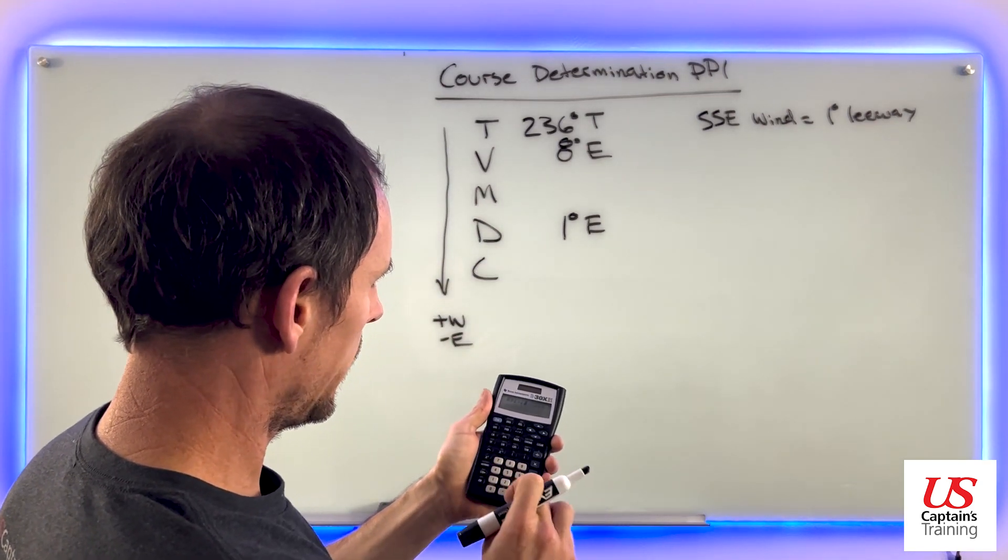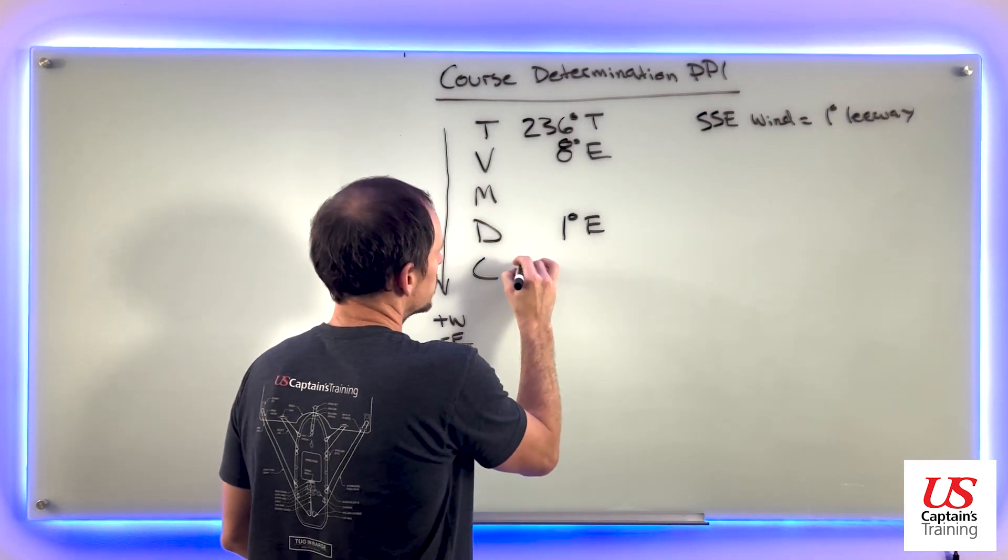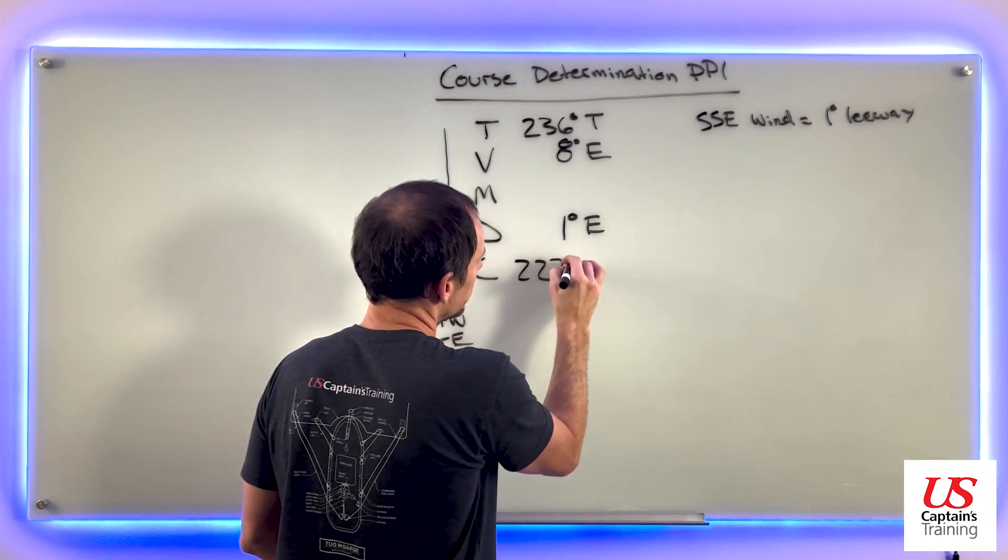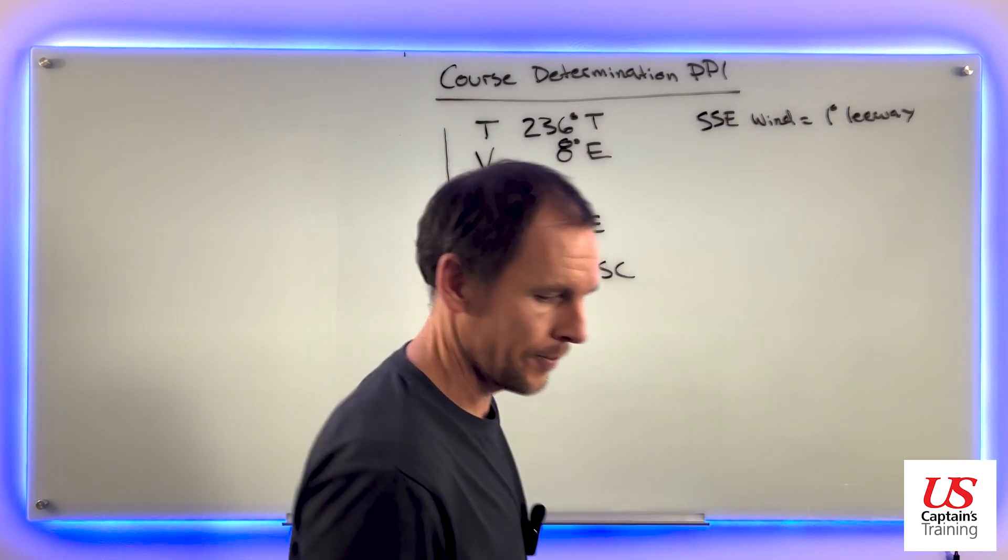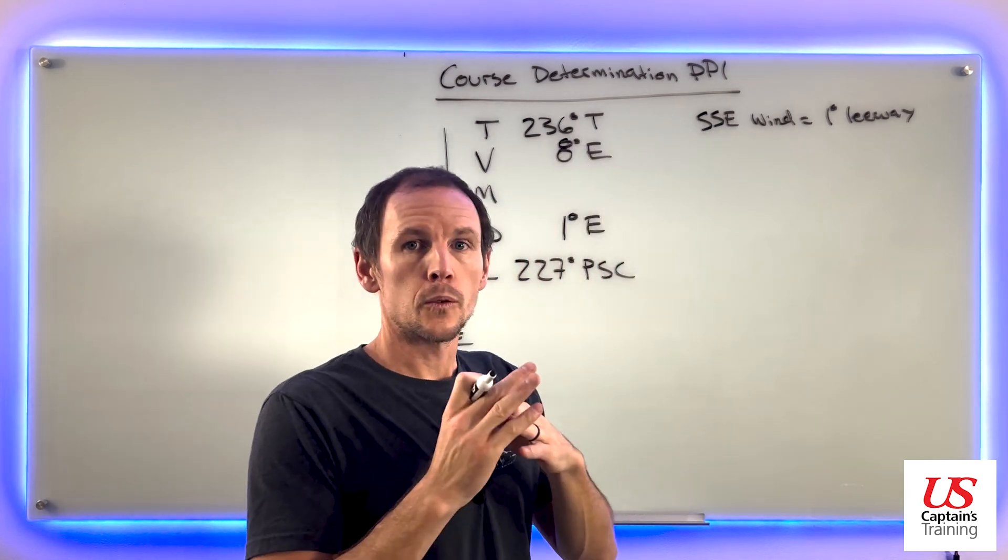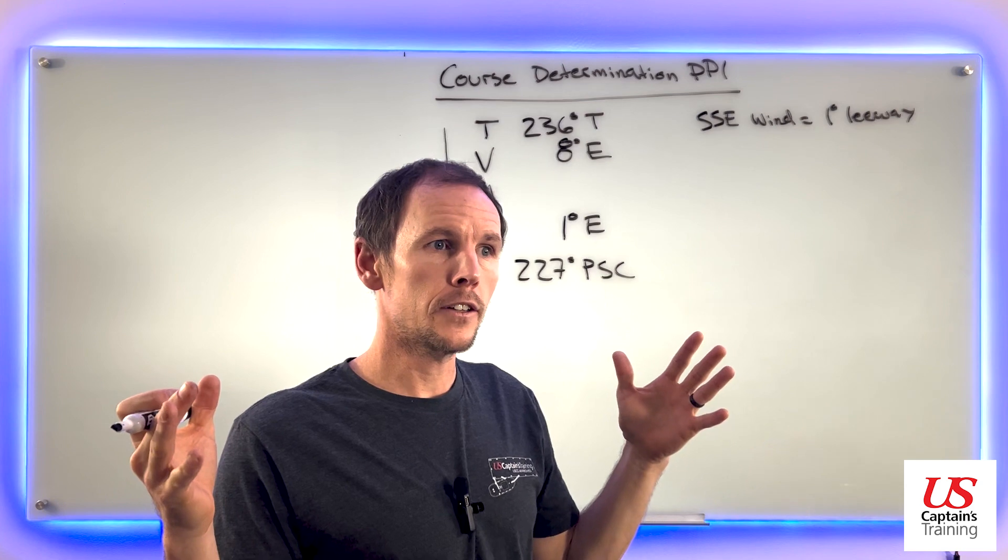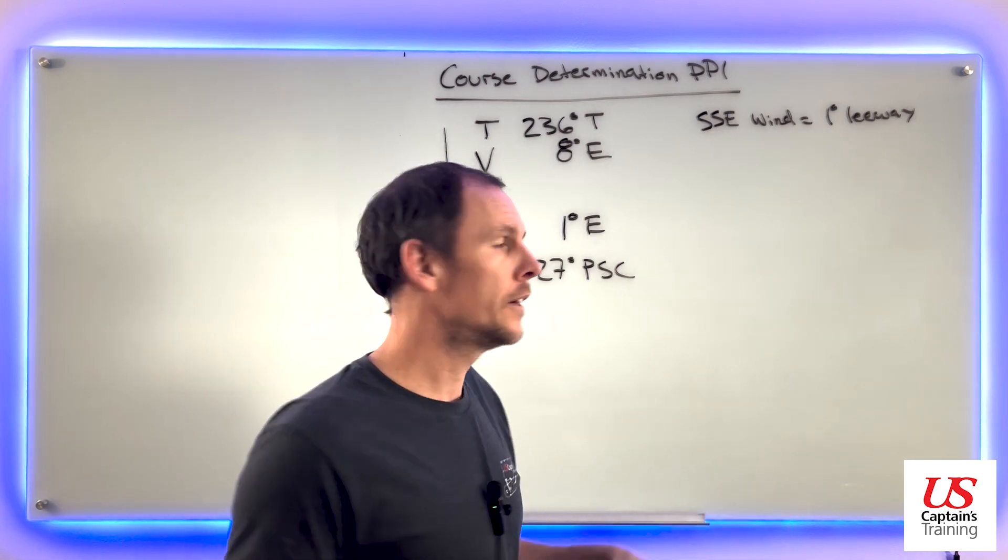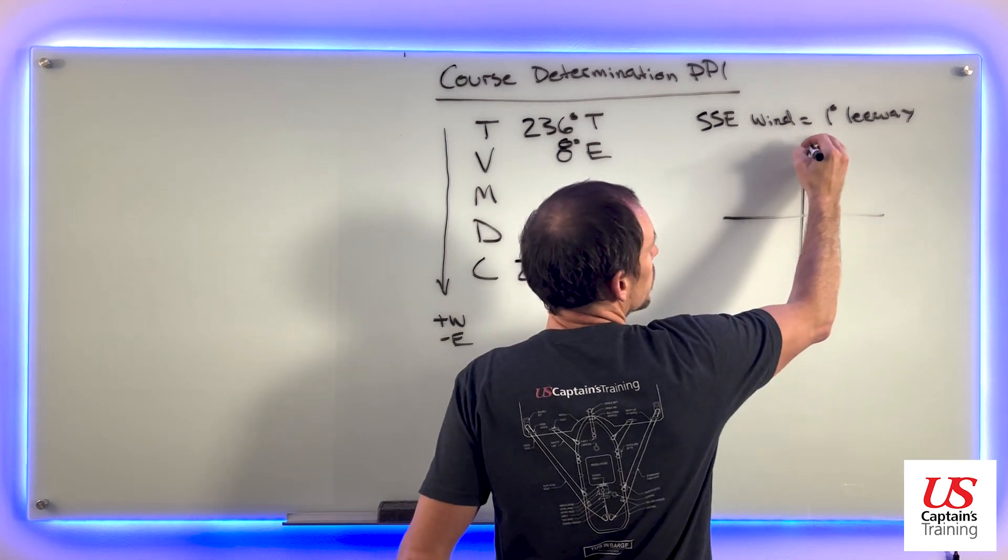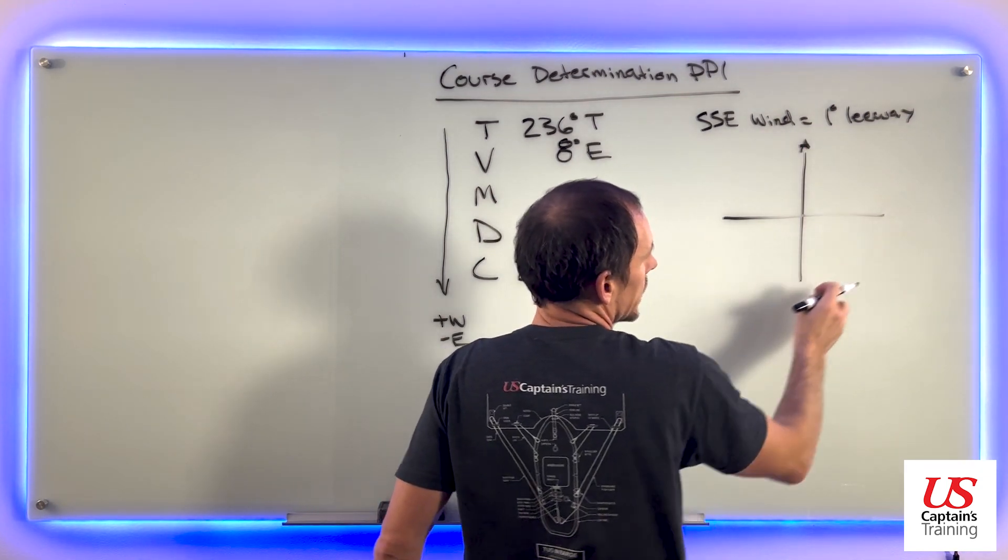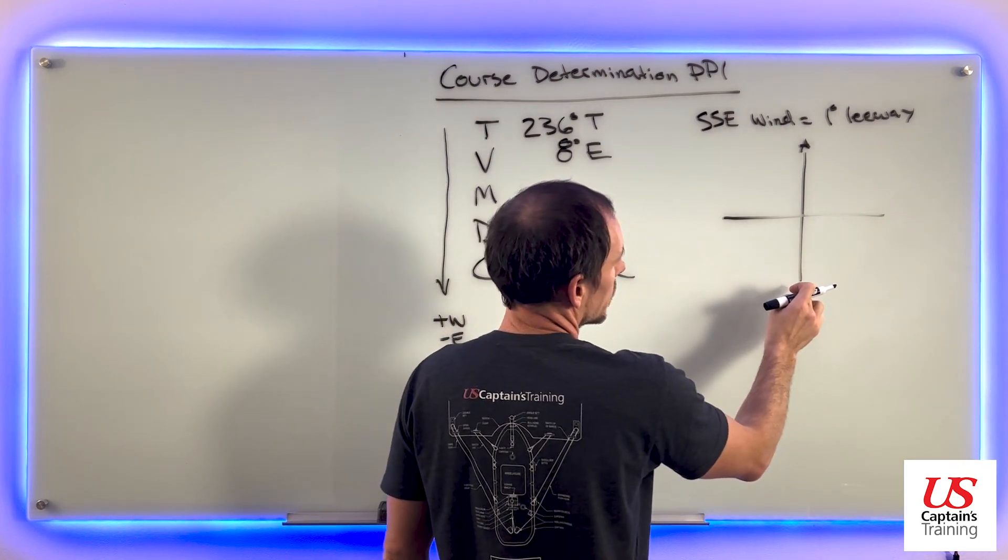227 degrees PSC. Now we need to account for leeway. We can visualize our course and the leeway caused by the wind by putting it on a compass. Right here's north, so we got 0, 90, 180, 270.